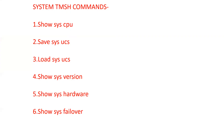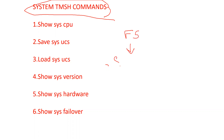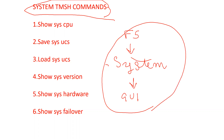Today we will be discussing command line interface for system-related commands. I've added a few commands which will help you check system-related commands in F5. We have the F5 system tab — if you go to the GUI, you will have the F5 tab and system tab. But if someone wants to check system-related commands via CLI and see results, we will cover some common commands starting from number one.